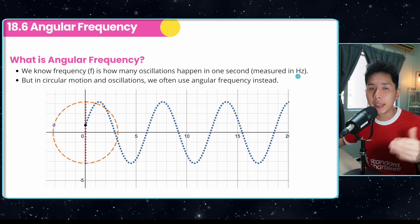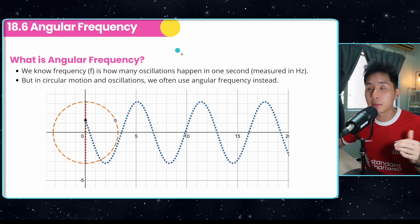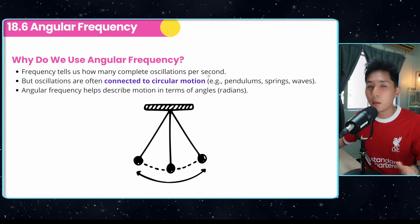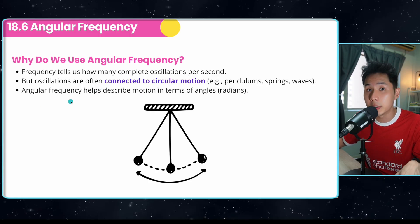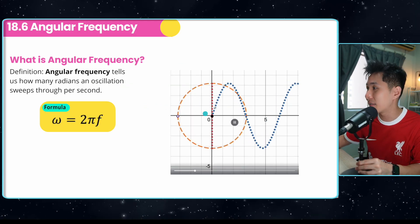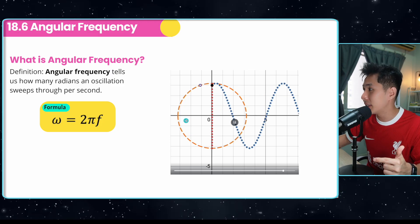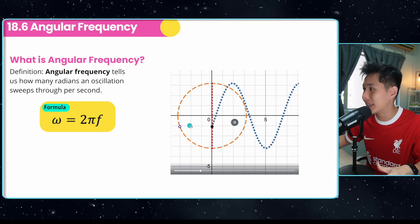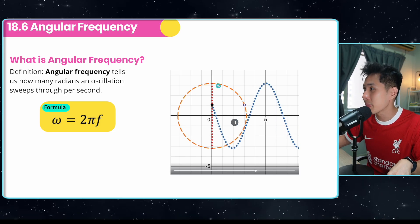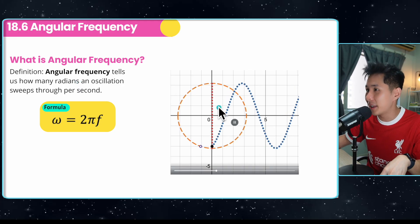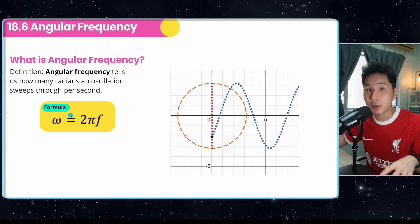Another important concept in SHM is angular frequency. Normal frequency tells us how many complete oscillations per second, but since oscillations are connected to circular motion, we use angular frequency instead. For every single oscillation — one sine wave — the corresponding point actually completes one full circle. Angular frequency tells us how many radians an oscillation sweeps through per second, and it is an essential component of every SHM equation.